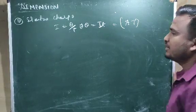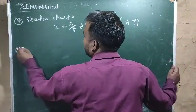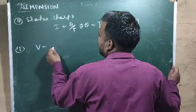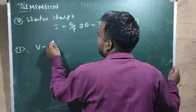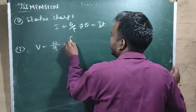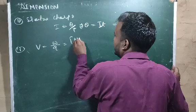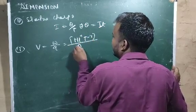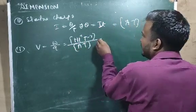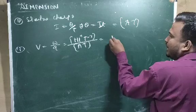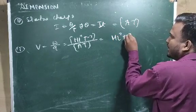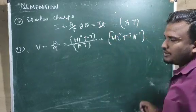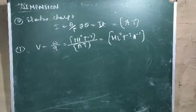Number 13 is potential. Potential V = W / Q. W has dimensional formula M L² T⁻² and charge has dimensional formula A T. Solving this, the result will be M L² T⁻³ A⁻¹. This is the dimensional formula for potential.